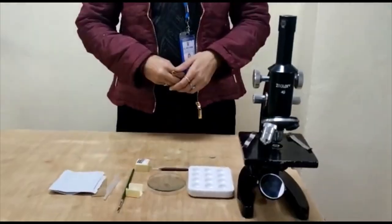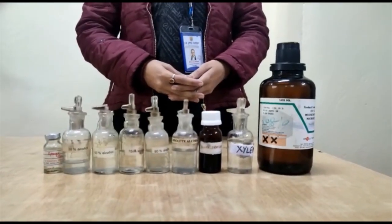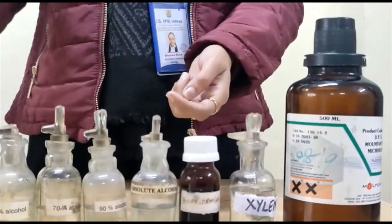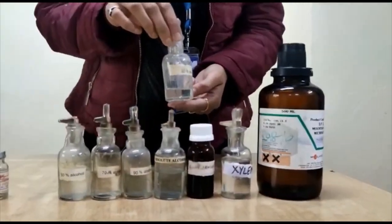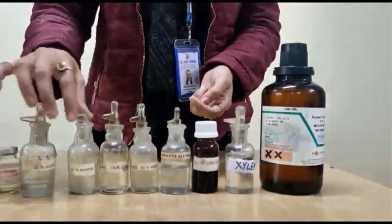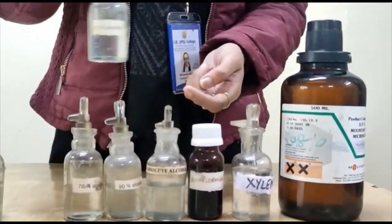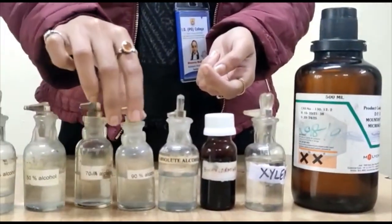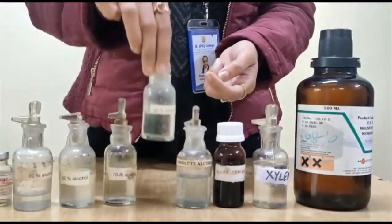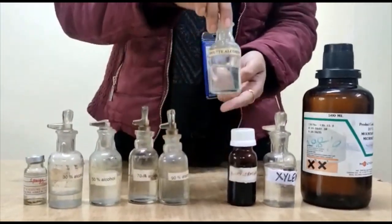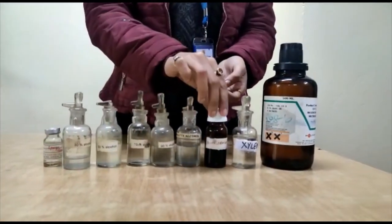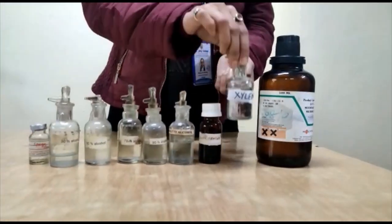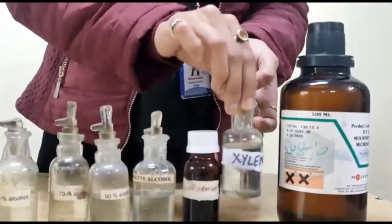Now the chemical required. Firstly, we need the sample of the gemmules, which are found in the sponges, and different grades of alcohol: 30% alcohol, 50% of alcohol, 70% of alcohol, 90% of alcohol, 100% or absolute alcohol, the stain borax carmine made in 70% of alcohol, xylene, and DPX for mounting.